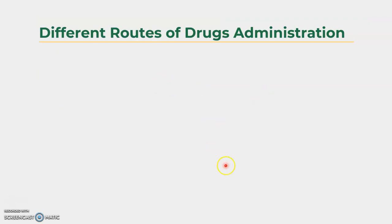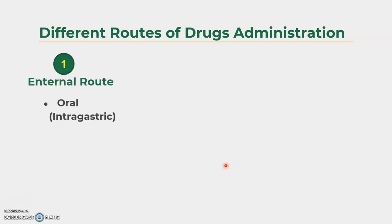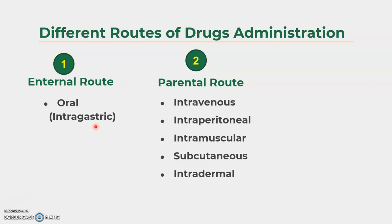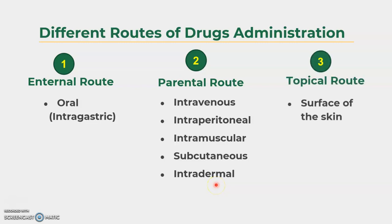The routes are divided into three main parts. Number one is the enteral route, also called oral or intragastric route. The second is the parenteral route, which is further divided into five types: intravenous, intraperitoneal, intramuscular, subcutaneous, and intradermal. The third is the topical route, via which you can apply the drug directly to the surface of the skin. Please write this classification in your notebook.